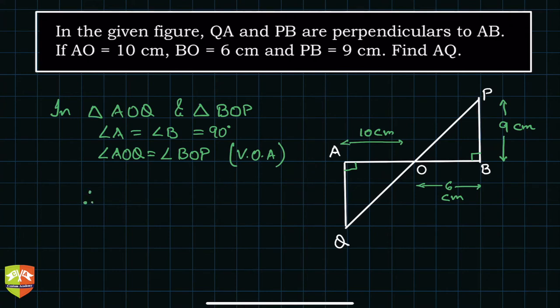Therefore, by AA similarity criterion, what do we get? We get AO by OB will be equal to AQ by PB. The corresponding sides will be proportional.